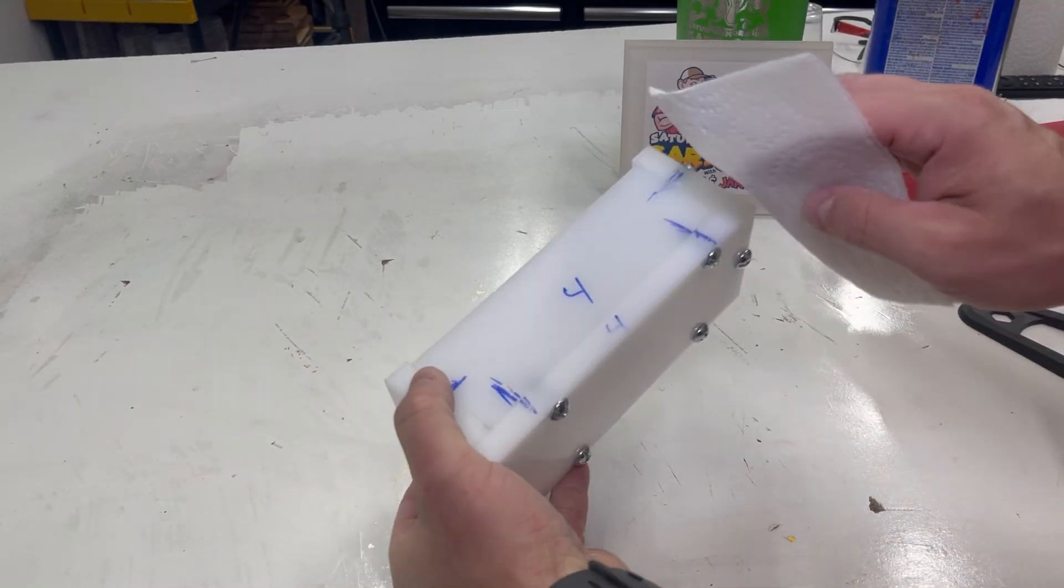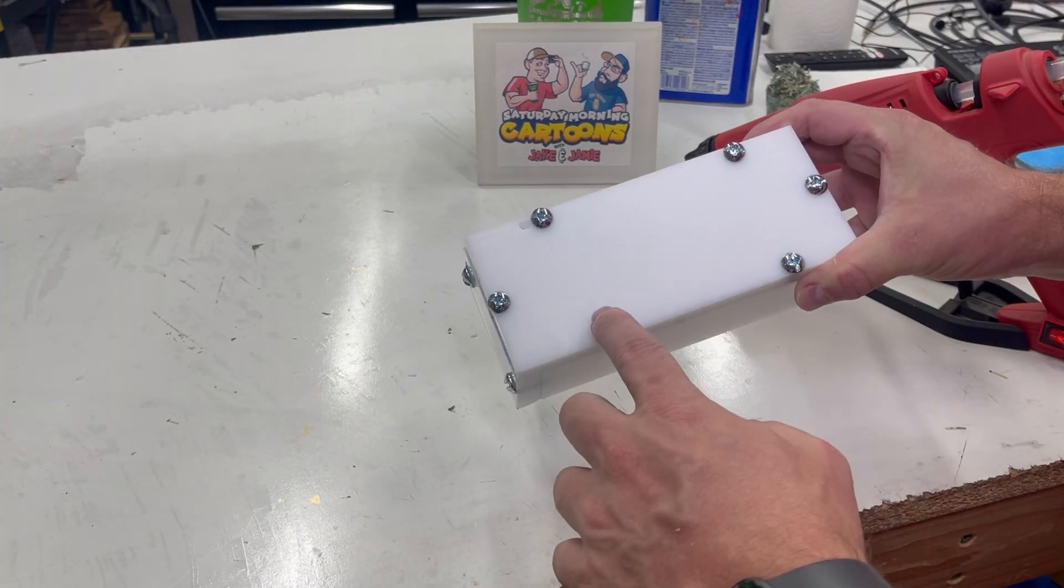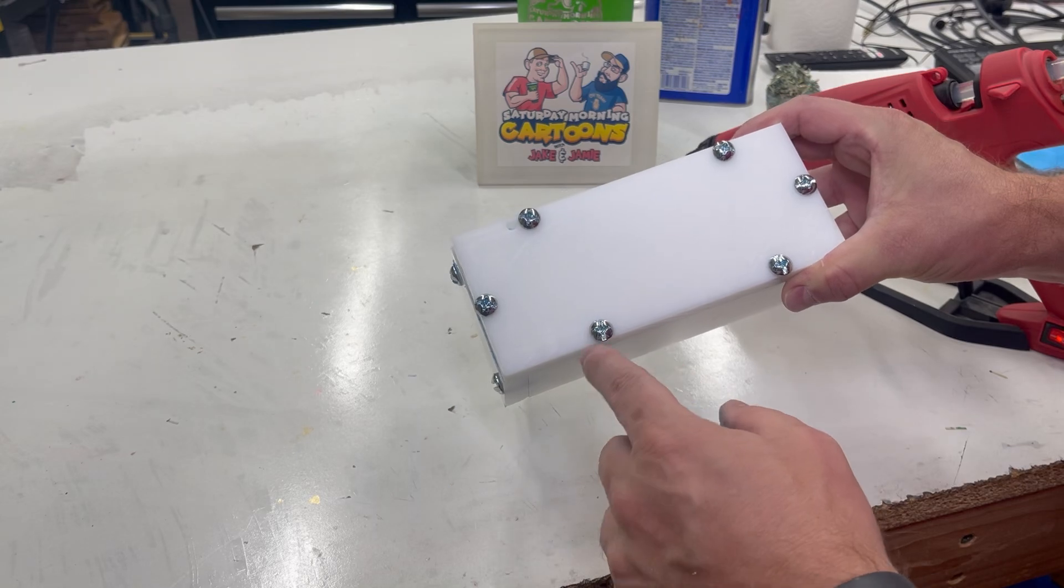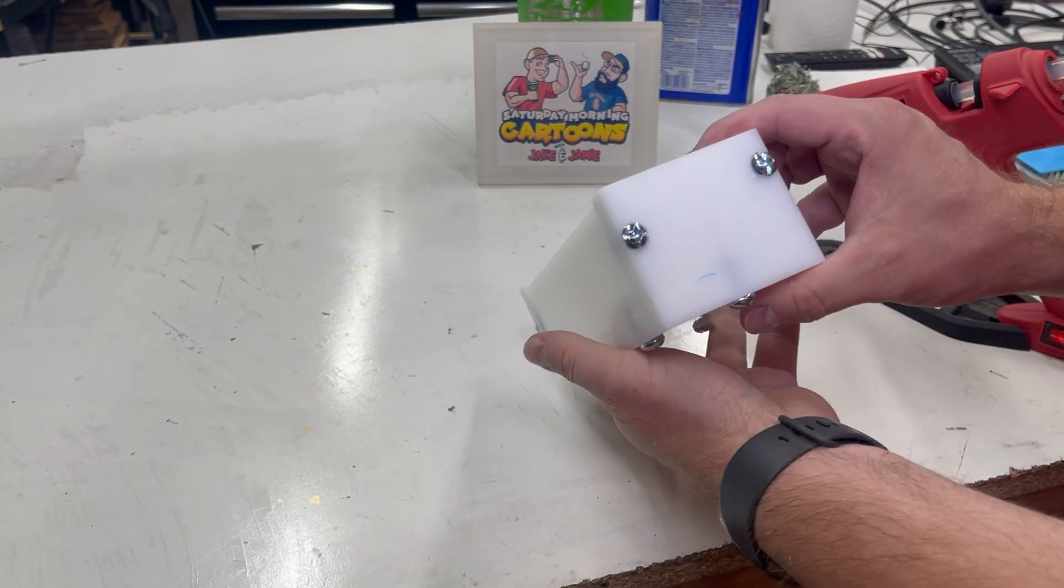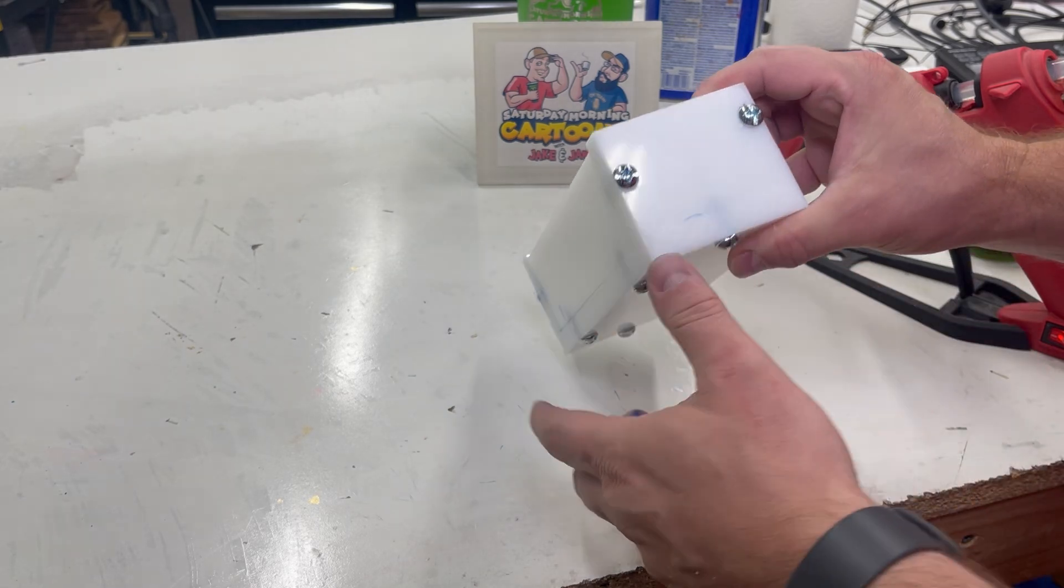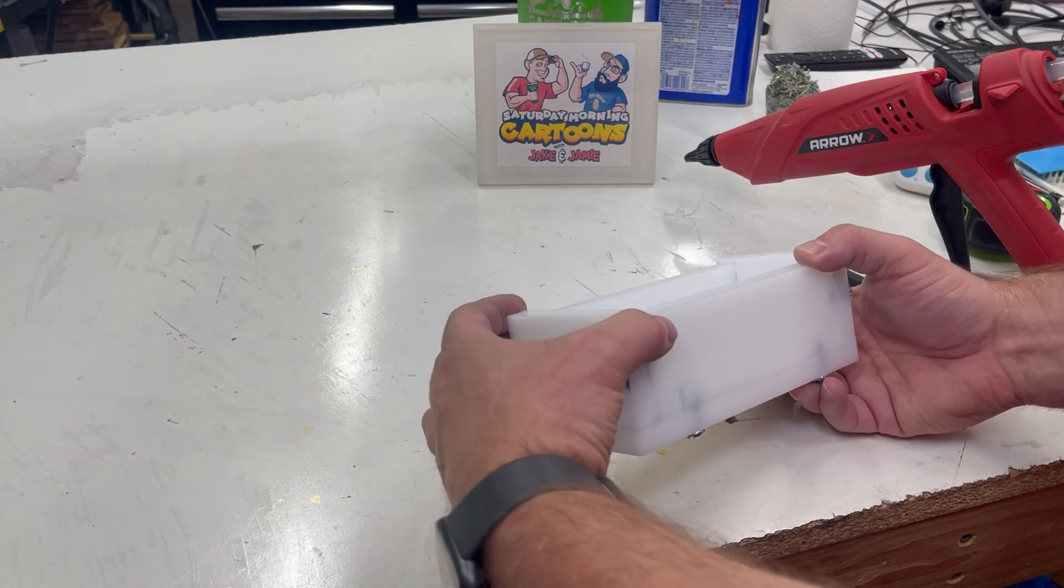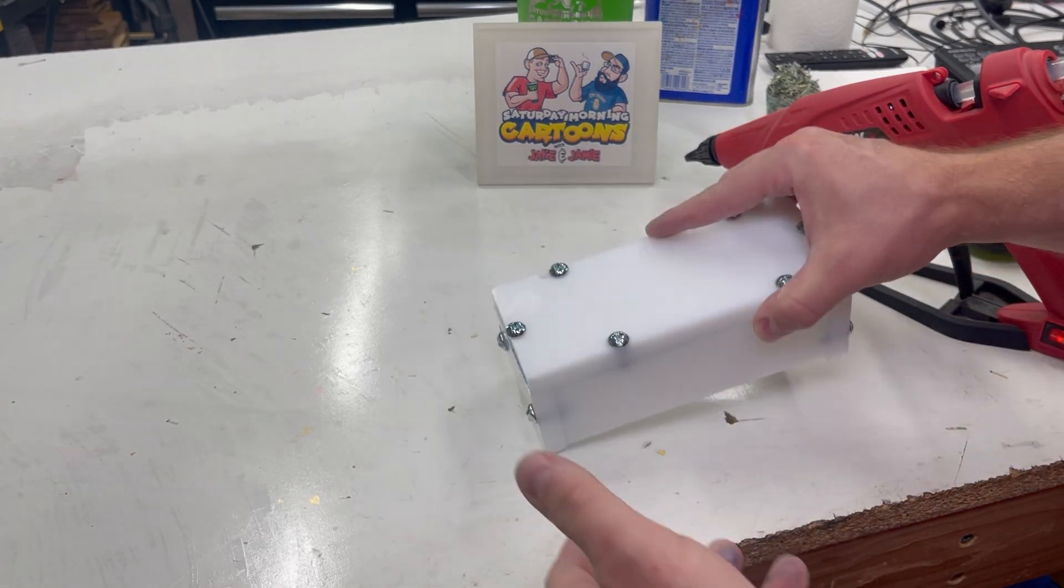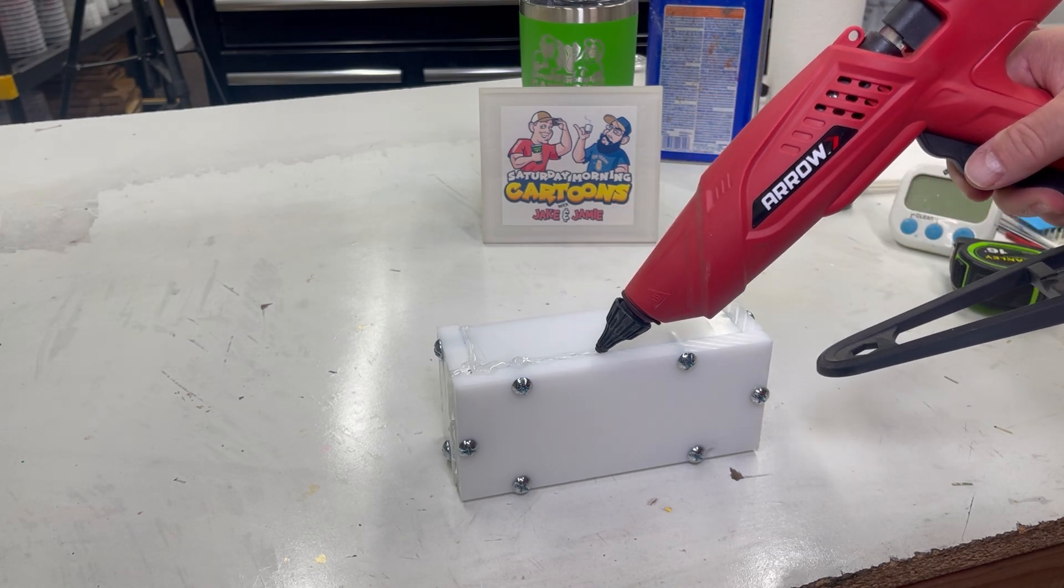I took all that blue marker off with denatured alcohol. As you can see, I did not index all these to where they're the same. So this thing, see how that's lower than that? That's way high. That's low. So this thing's only going to go back together one way. And when you do your castings, you're only going to need to take one end off and tap it and get your cast out.